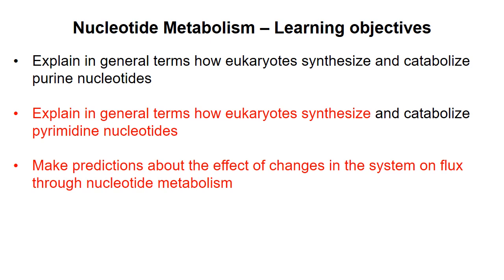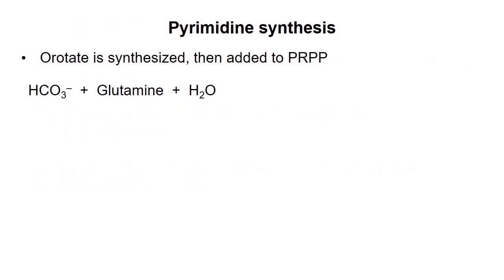In this video, I'll describe how eukaryotes synthesize pyrimidines and talk a little bit about regulation of the pathway. The strategy for pyrimidine synthesis is different from that of purine synthesis. Here, the pyrimidine ring is assembled separately as the molecule orotate, then the assembled ring is added to PRPP.